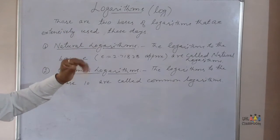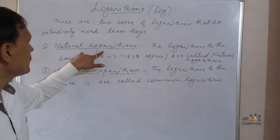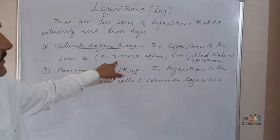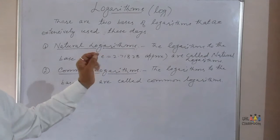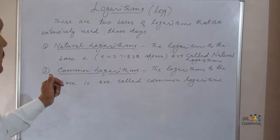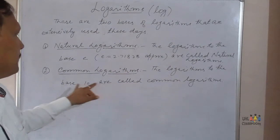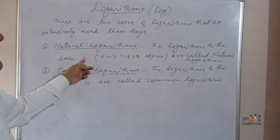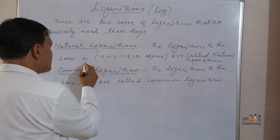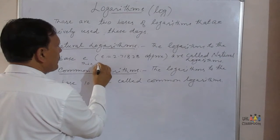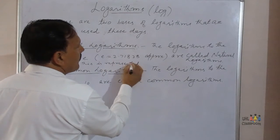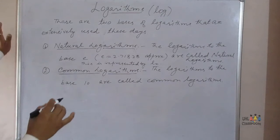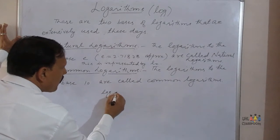There are two bases of logarithms that are extensively used. First, natural logarithms — logarithms to the base e, which is approximately 2.71828 — are called natural logarithms. Second, common logarithms — logarithms to the base 10 — are called common logarithms. Natural logarithms are represented by ln of n, and common logarithms are written simply as log of n.